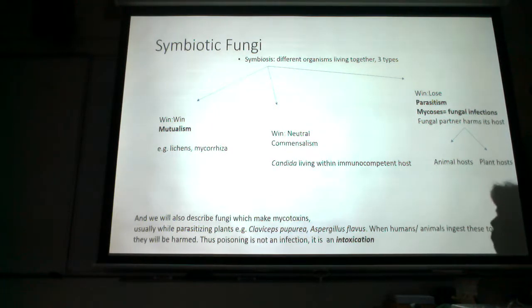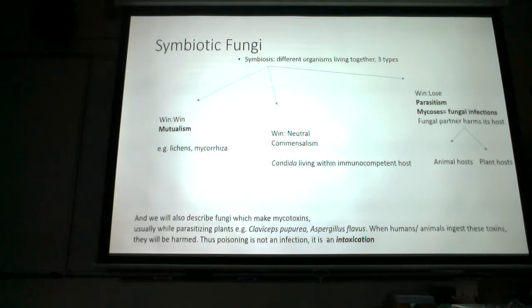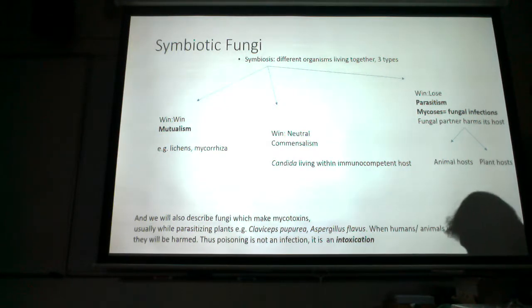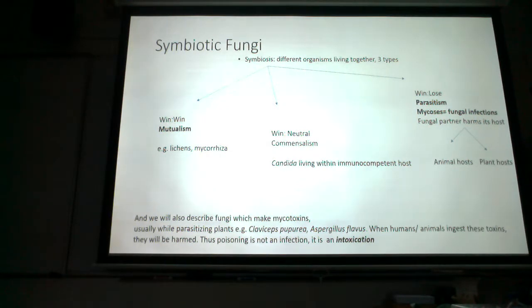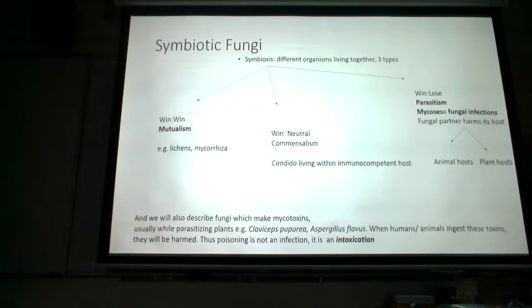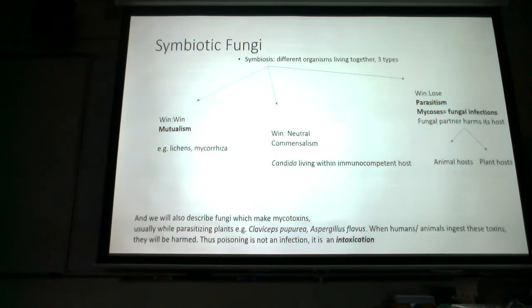Another type of symbiosis is a win-neutral relationship, where one partner benefits and the other is neither harmed nor benefits. We'll use Candida albicans in low numbers on mucous membranes as an example. The last type is win-lose, called parasitism, where one partner benefits and the other is harmed. The winner is the parasite and the loser is the host. This is where we use the term mycoses.